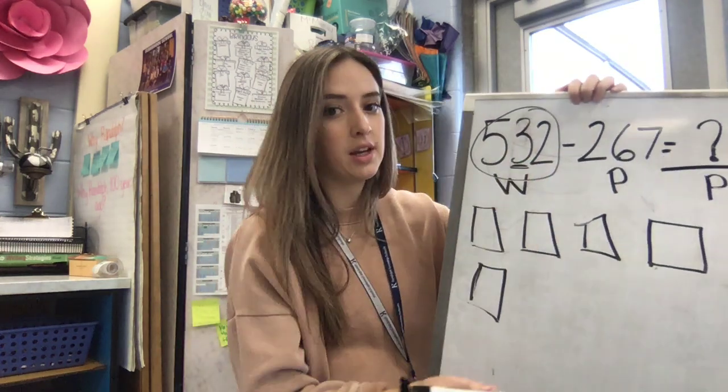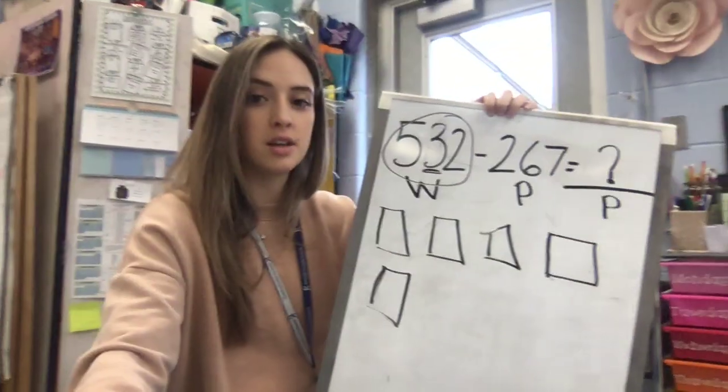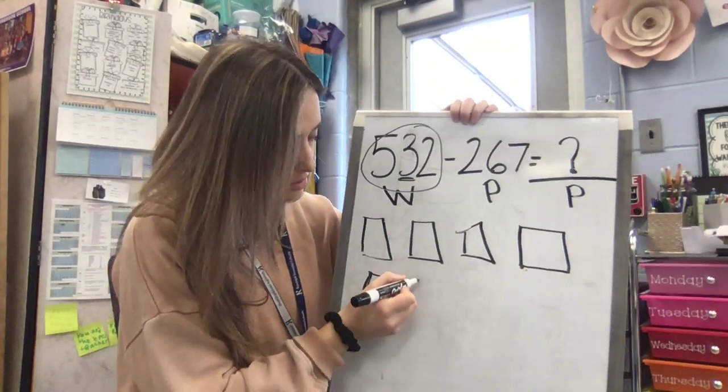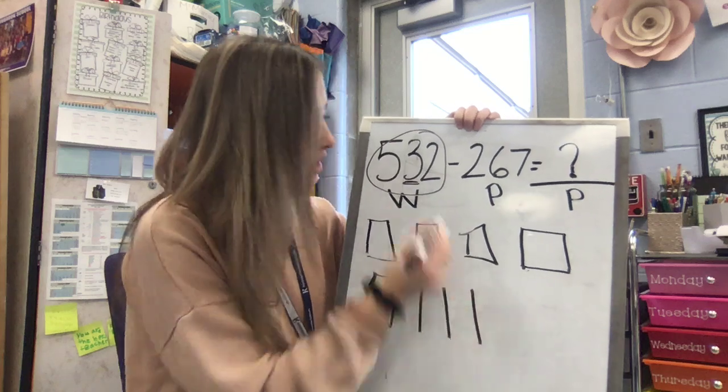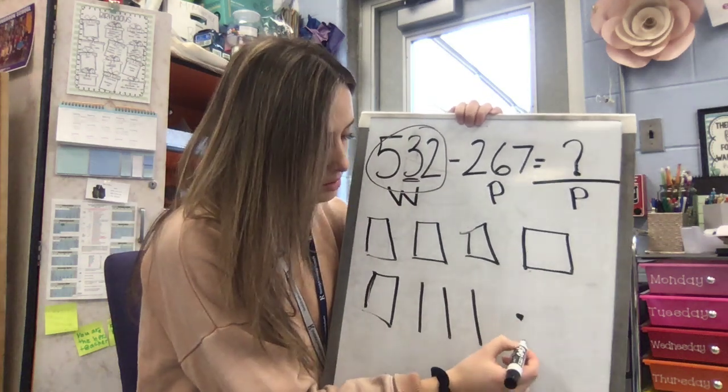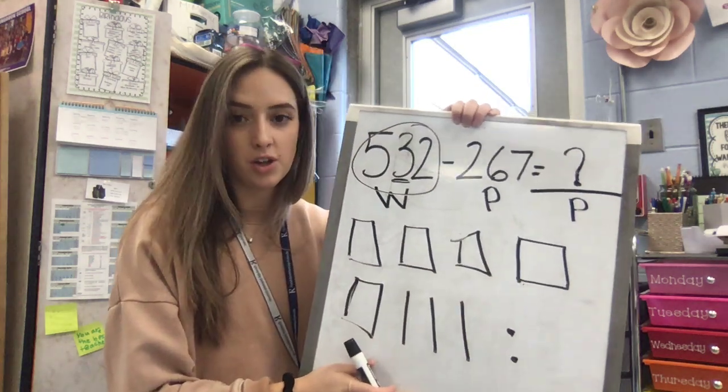Now I need to draw my tens, right? 500, 30, so 10, 20, 30, and 2 ones: 1, 2. This is the number 532.